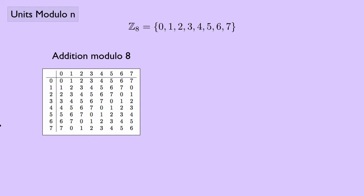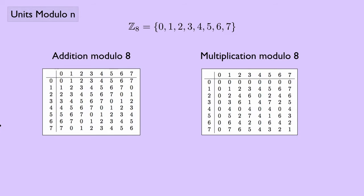We also have multiplication modulo 8, and we can make a table for that. We can see, for instance, that something like 4 times 3, which would normally be 12, but 12 modulo 8 is 4.